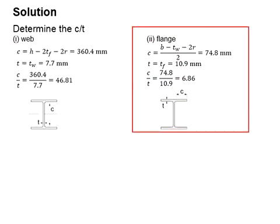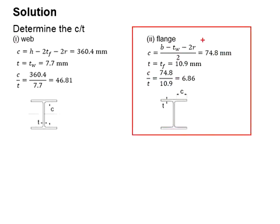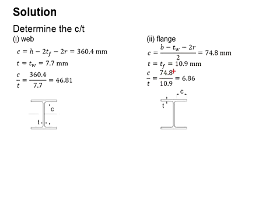As for the flange, the c is 74.8 mm, the thickness of the flange is 10.9 mm, and the c/t ratio is 6.86.